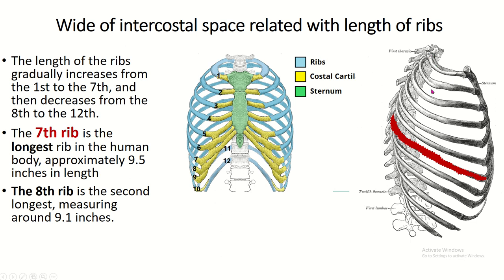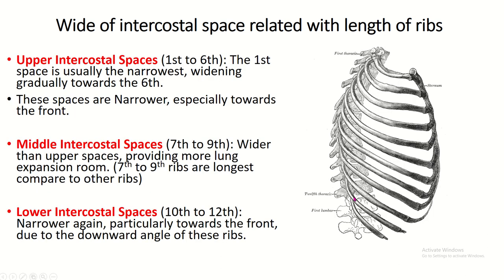You can see the first rib is the shortest and broadest, and gradually the size of the ribs increases, then again decreases. So the longest rib of the body is the 7th rib at 9.5 inches in length, and the second largest is the 8th rib at 9.1 inches in length. The upper intercostal space — the first space is usually the narrowest — gradually widens toward the 6th intercostal space. The middle intercostal space is wider than the upper space, and the lower intercostal space is narrower again, particularly toward the front.